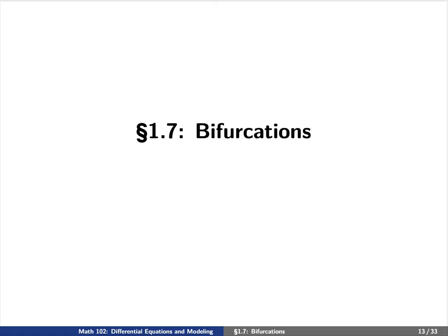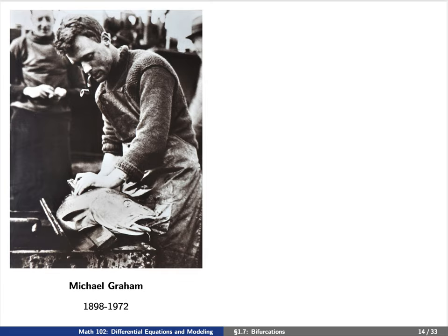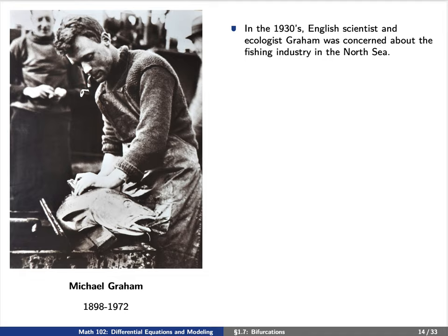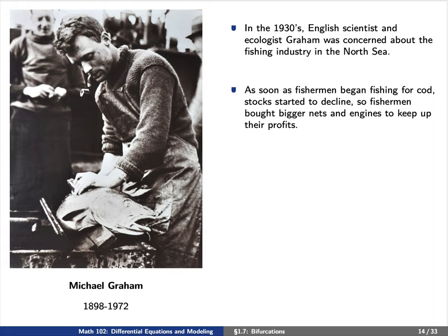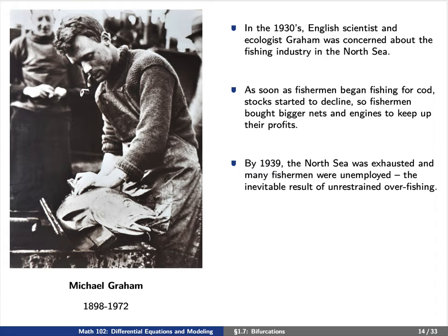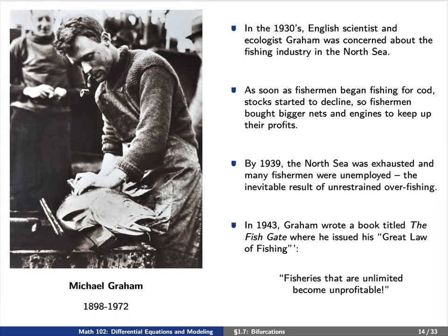Today we're going to discuss the concept of bifurcations. In the 1930s, English scientist and ecologist Michael Graham was concerned about the fishing industry in the North Sea. He realized that as soon as fishermen began fishing for cod, their stocks started to decline, so fishermen brought bigger nets and engines to keep up their profits. Unfortunately, by 1939 the North Sea was exhausted and many fishermen were unemployed — the inevitable result of unrestrained overfishing. A few years later, in 1943, Michael Graham wrote a book titled The Fishing Gate, where he issued his so-called Great Law of Fishing: fisheries that are unlimited become unprofitable.